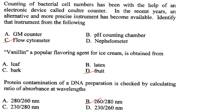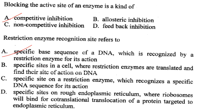Protein contamination of a DNA preparation is checked by calculating the ratio of absorbance at wavelengths 260/280 nanometers. Answer is option B.